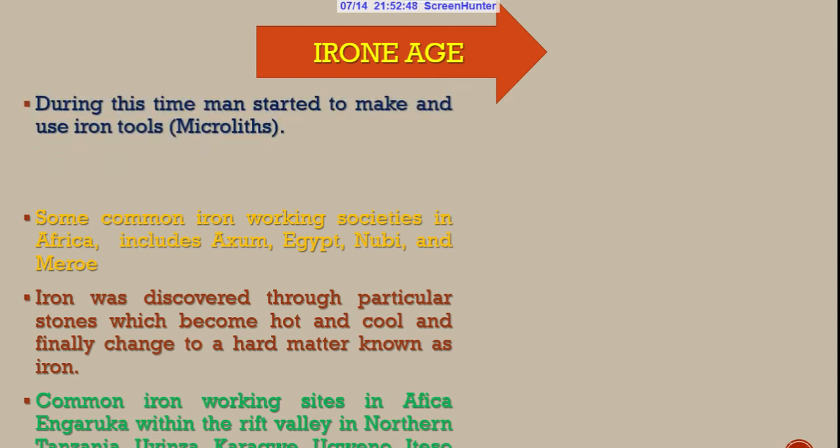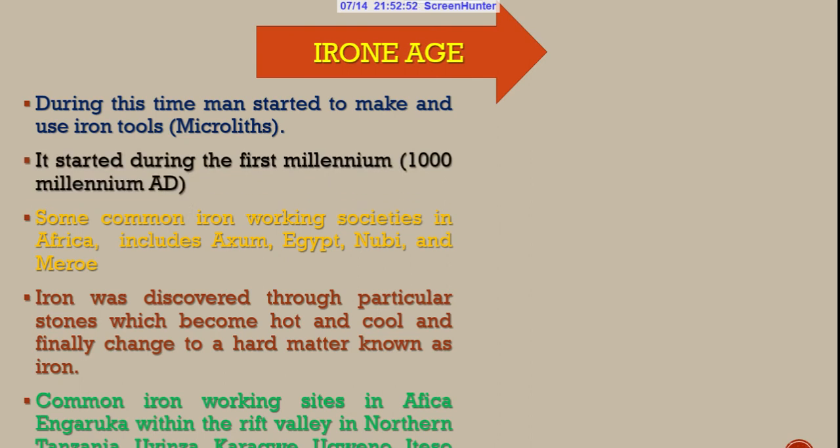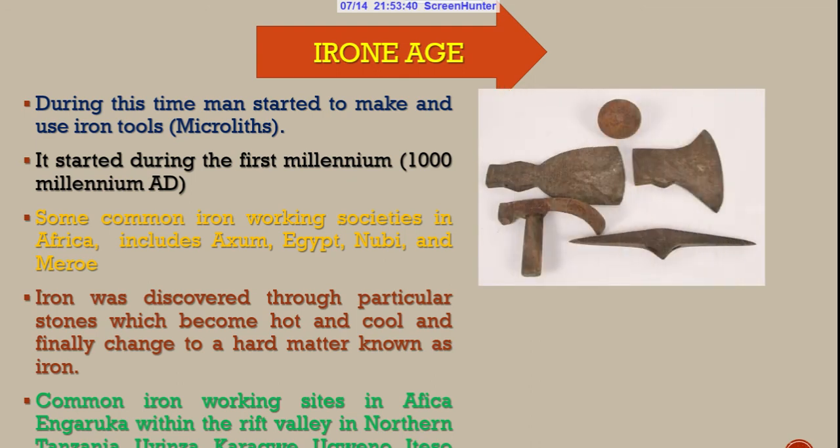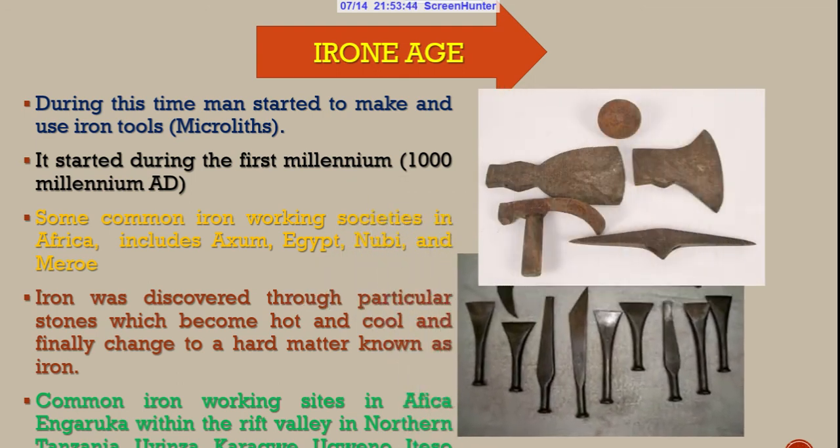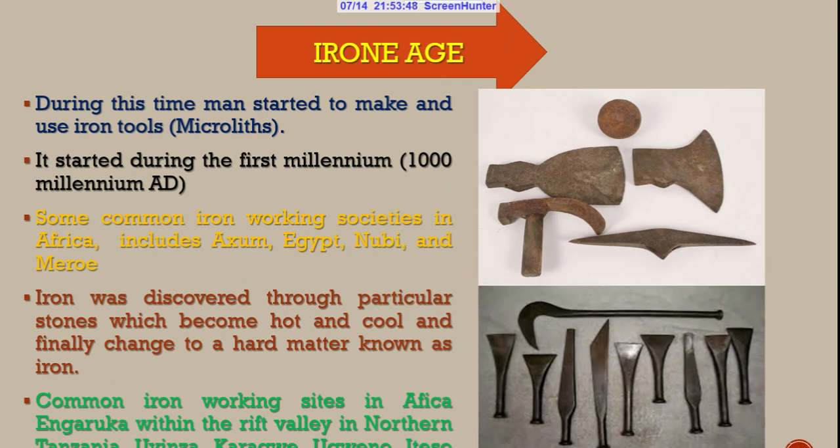The Iron Age started during the first millennium AD, when man was using iron tools or microliths. Some of the common iron working societies in Africa include Axum, Egypt, Meroe, and Nubia of northern Africa. Iron was discovered in particular stones or clay which, when heated and cooled, changed to iron particles. Common iron working sites in Africa include Engaruka, Karagwe, Uvinza, Ugweno, Iteso along the lake shores of Lake Victoria.